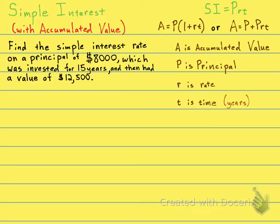We have a simple interest problem with accumulated value, and it says to find the simple interest rate on a principal of $8,000, which was invested for 15 years, and then had a value of $12,500.